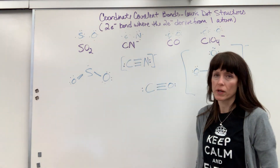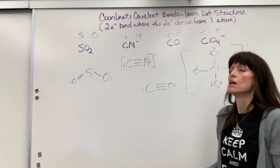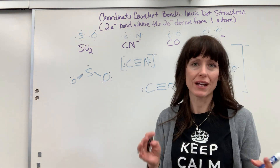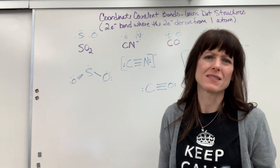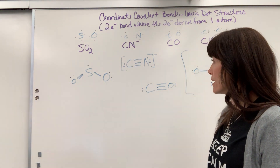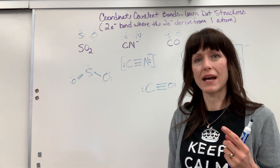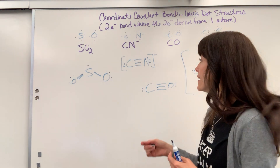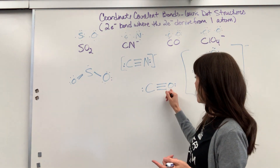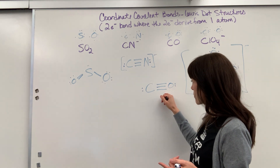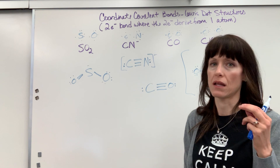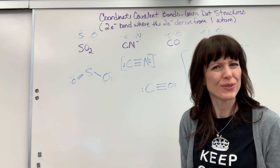Great work. Coordinate covalent: if you cannot get an octet by using regular sharing — single, double, or triple bonds — then see if there's an atom that will move in and say, 'Hey, let's share, but I won't give you anything,' donating both of its electrons for the bond so you can maintain an octet. You're doing so well. Good work.